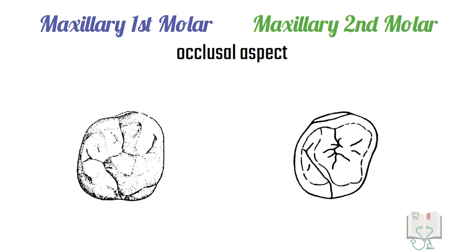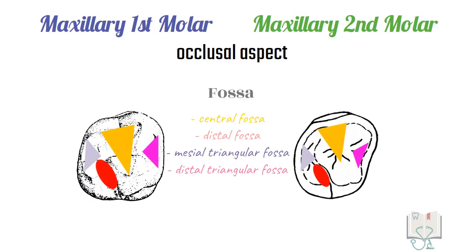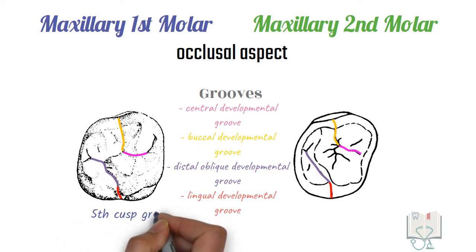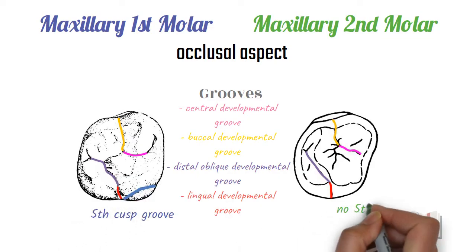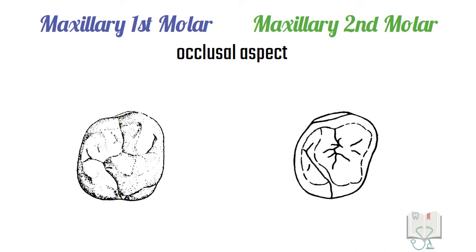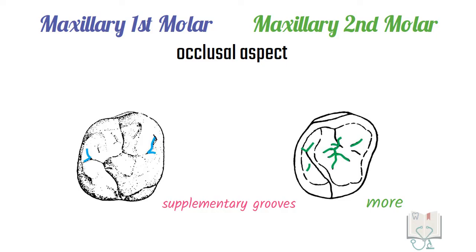Apart from that, both molars are similar with respect to their ridges, their fossae, and their developmental grooves, except maxillary first molar has a fifth cusp groove associated with the fifth cusp, which is not seen in the second molar. Moreover, the number of supplementary grooves is greater in the second molar than in the first molar.